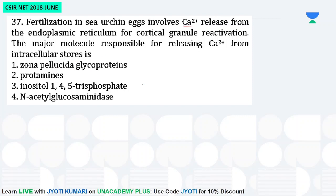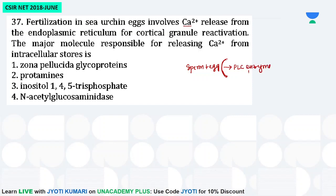You will remember that I told you that when sperm binds to the egg, the egg is in the endoplasmic reticulum pathway. At the time of the fast block, the PLC enzyme activates, and the PLC enzyme mainly works with PIP2, which is a type of phospholipid.